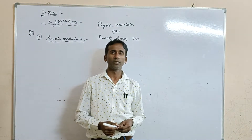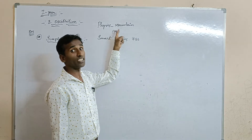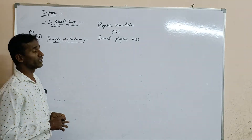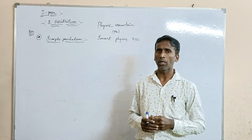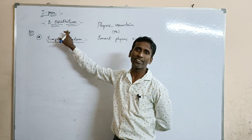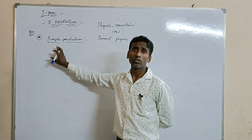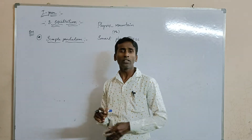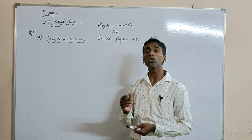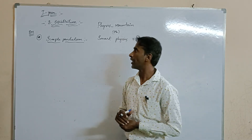Hi guys, welcome to my channel. My channel name is Physics Mountain, physics underscore mountain, or Smart Physics 786. Now I'm going to take a new chapter — the chapter name is the eighth chapter: Oscillations. In that chapter, we are having two most important LAQs. The first one is simple pendulum, and we have to show that the motion of a simple pendulum is simple harmonic motion. Along with this question, you will get one extra question and sometimes one problem also.